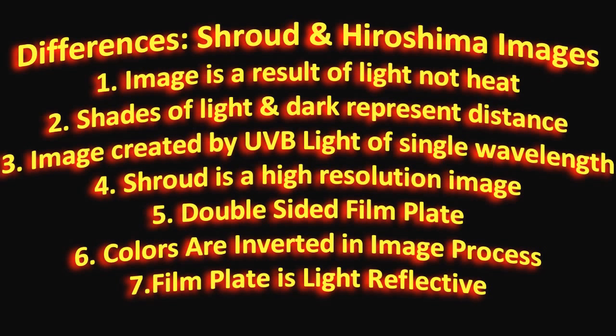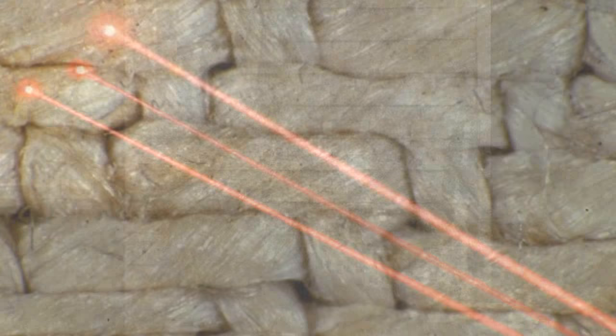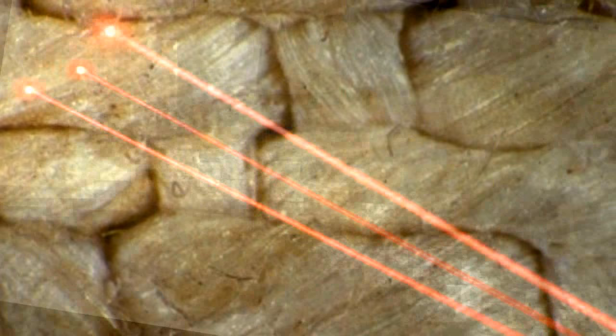These are the differences between the shroud and the Hiroshima images. Number one, the shroud image is more a result of light than heat, whereas the Hiroshima images are a result of both light and heat. Number two, shades of light and dark represent distance points on the Shroud of Turin, whereas in the Hiroshima images the shades of light and dark do not represent distance. On the Shroud of Turin, colored versus uncolored fibers represent distance — where the cloth is closer to the body, more linen fibers are colored, and as there is greater separation, fewer fibers are colored.